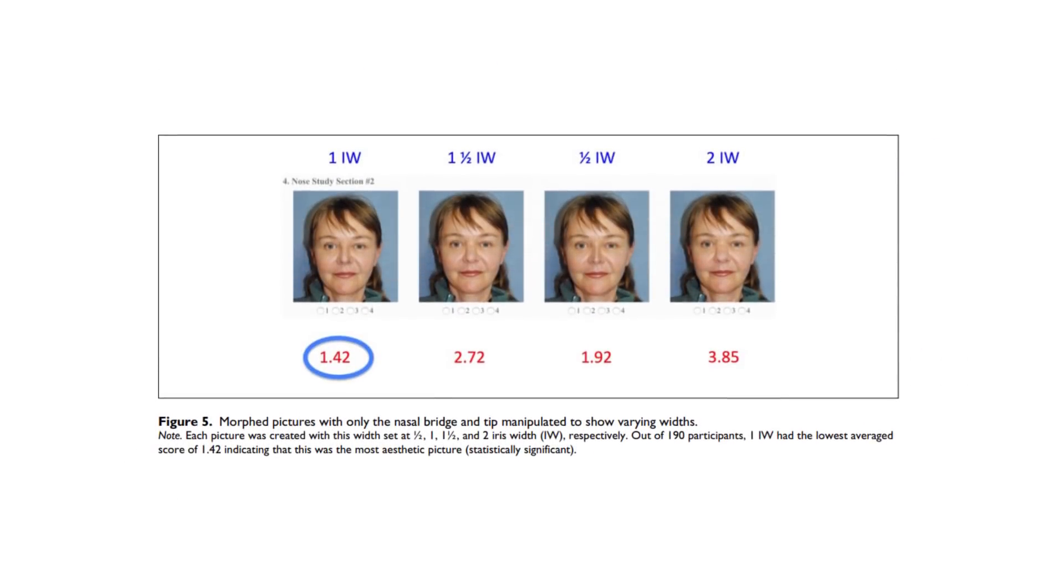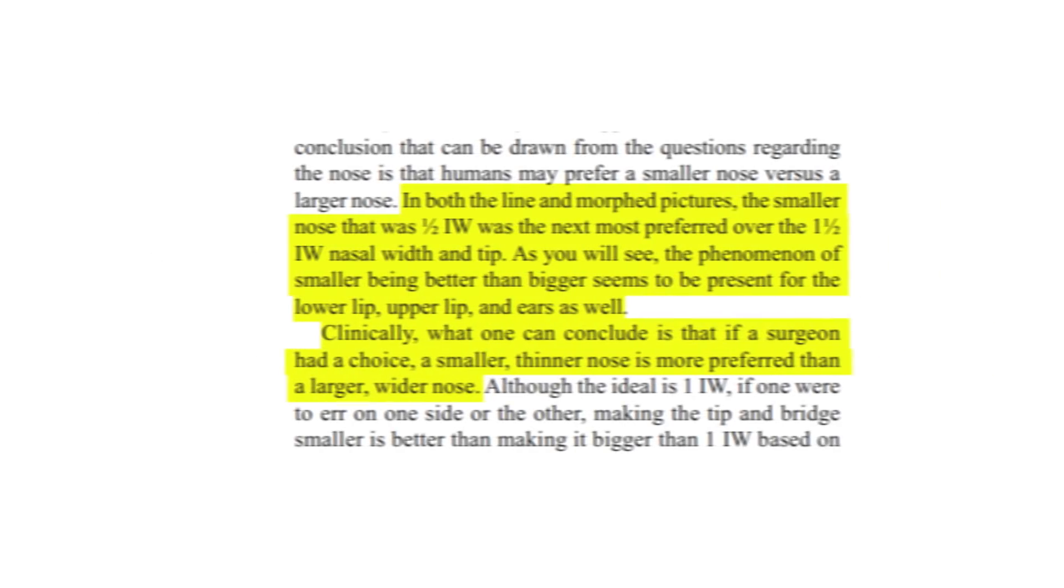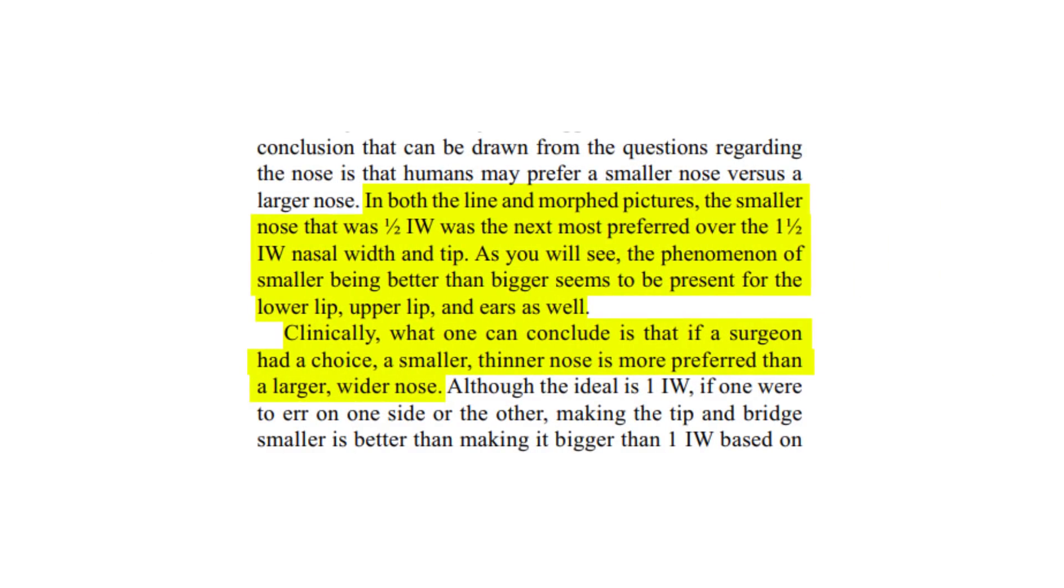In these figures, Young studied the nose to test the prominence hypothesis stating that the ideal width of the nose bridge and tip should be one iris width. In both the line and morphed pictures, a smaller nose of half iris width was the second most preferred size over the one and a half iris width size. This supports a lot of other guidelines that we've seen all over the literature that smaller nose sizes are generally better than their bigger counterparts depending on the ethnic group.